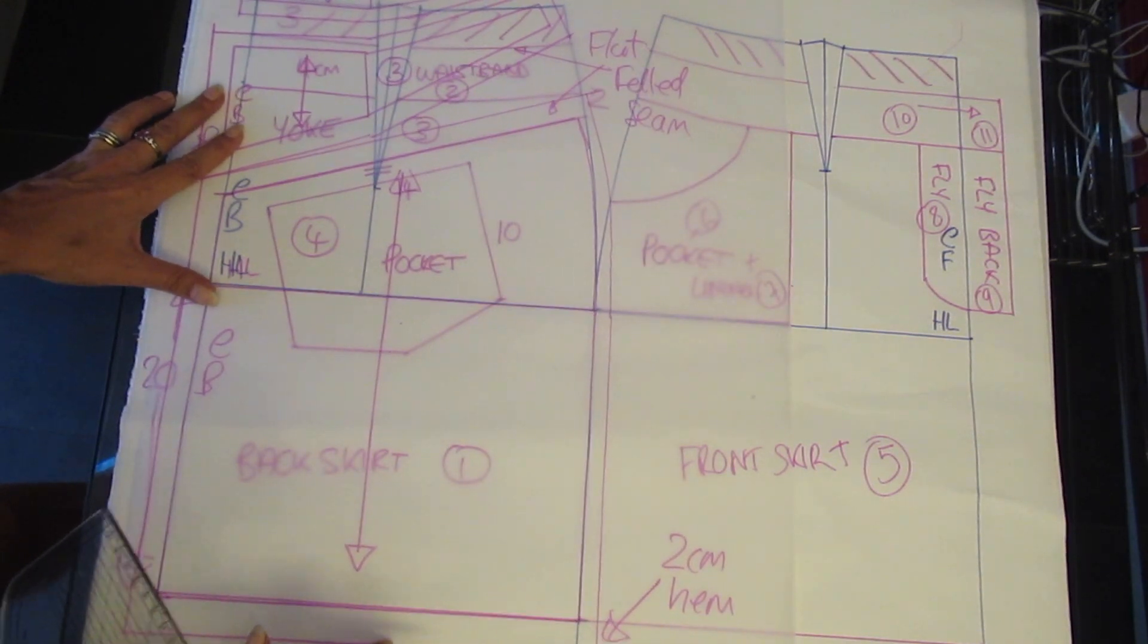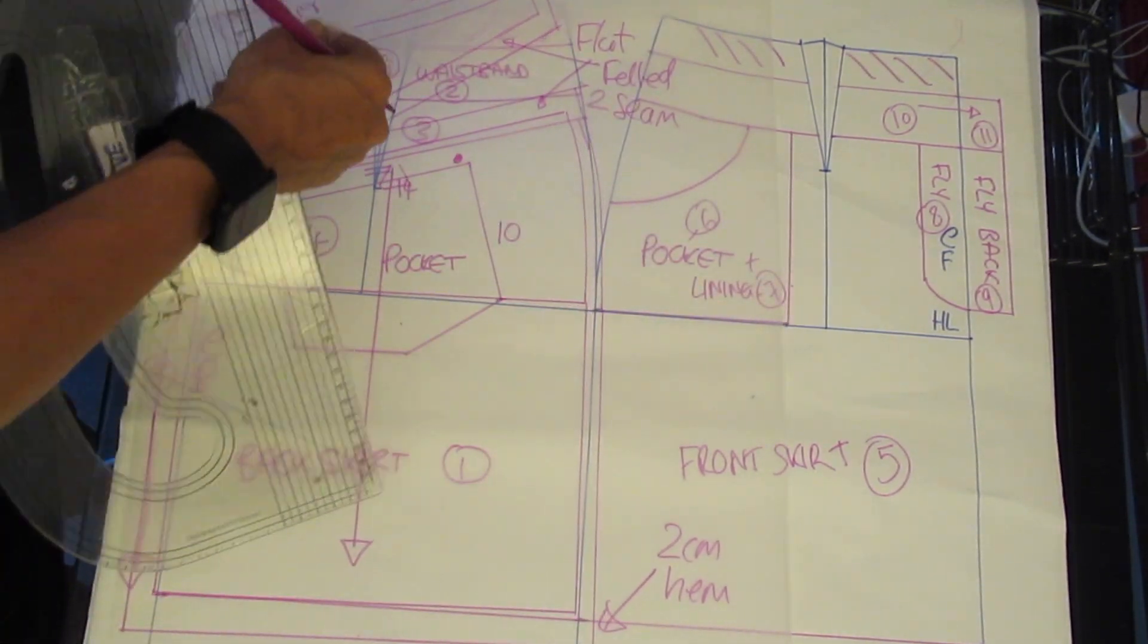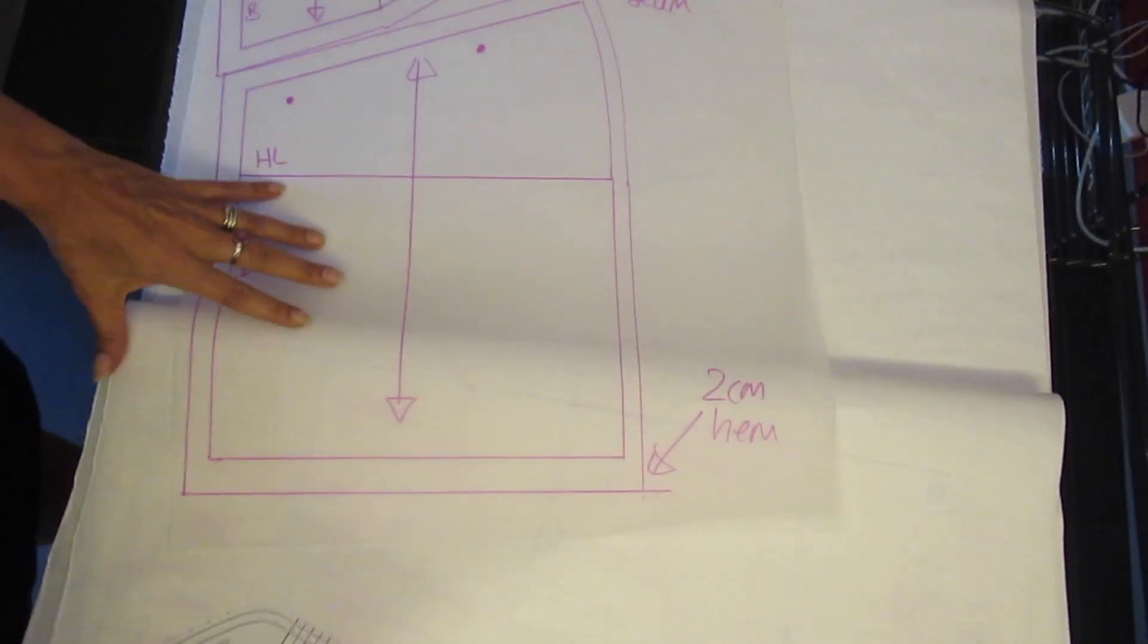Now what we forgot to do was draw in the two dots which show where the pocket position will be when you come to sew the sample.